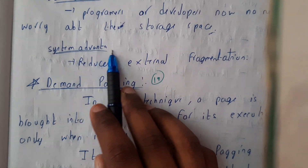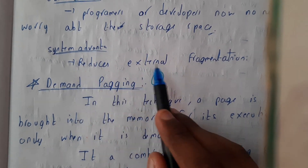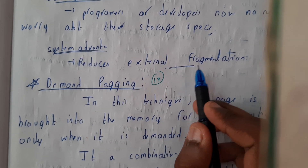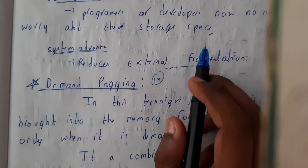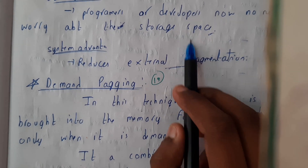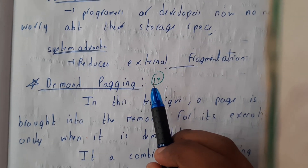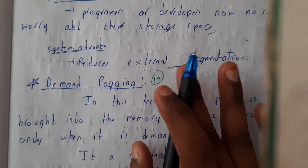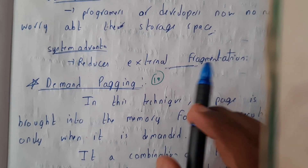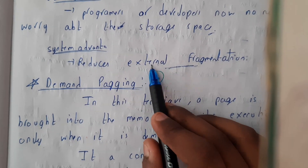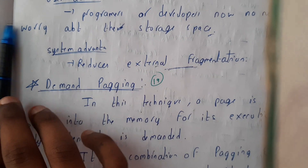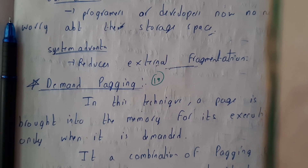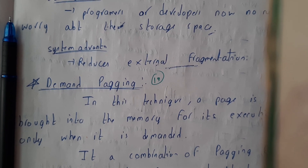For the system, the advantage is that there will be lesser chances of external fragmentation, because there will always be substitution. Even though we have non-contiguous memory spaces, this problem will be reduced. In the next tutorial we'll be going through demand paging. Thanks for watching.